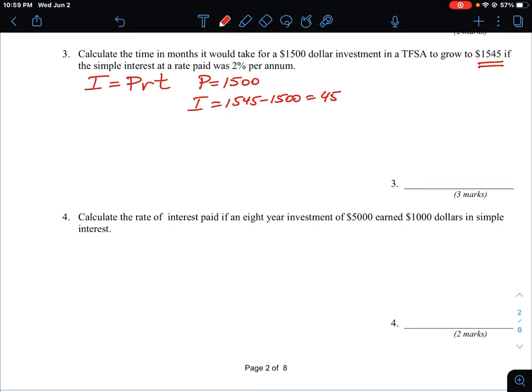Okay, so usually the interest amount is fairly small, especially if it hasn't been invested for a long period of time. So you wouldn't want to say $1,545 is the interest, you would just want to say it's $45. So you'd have to recognize that and do that calculation.